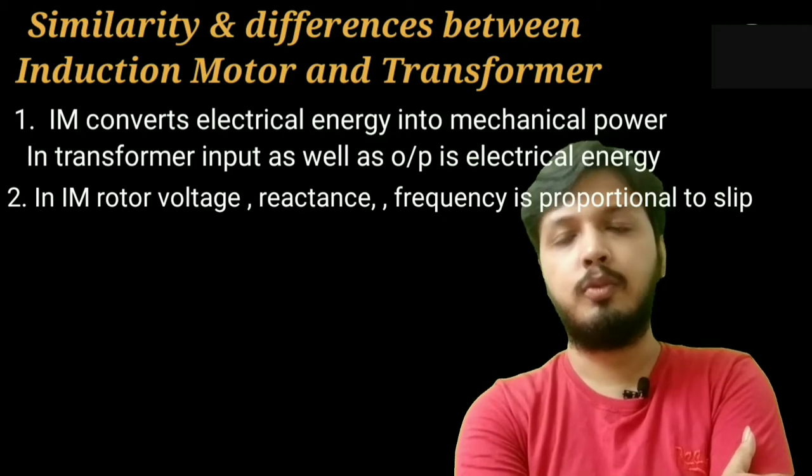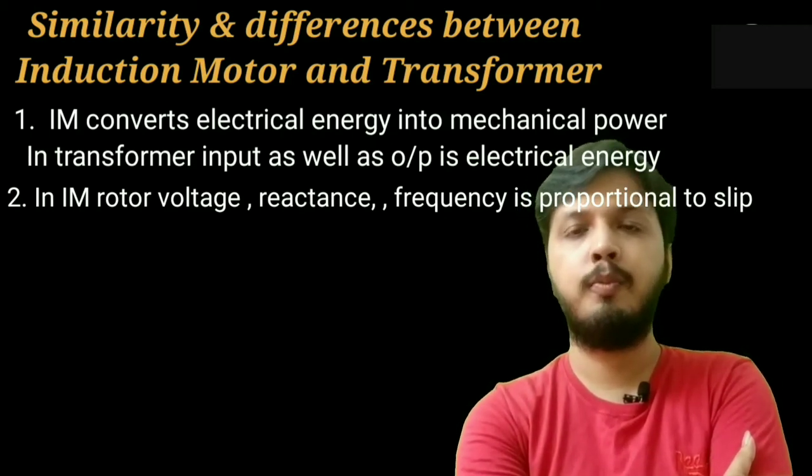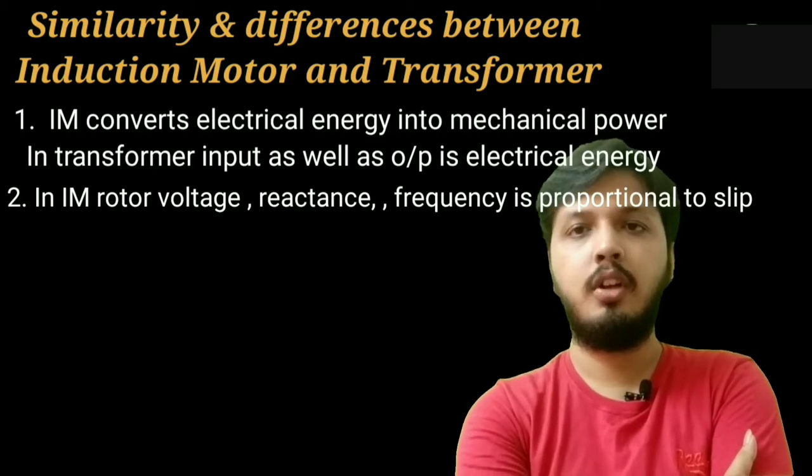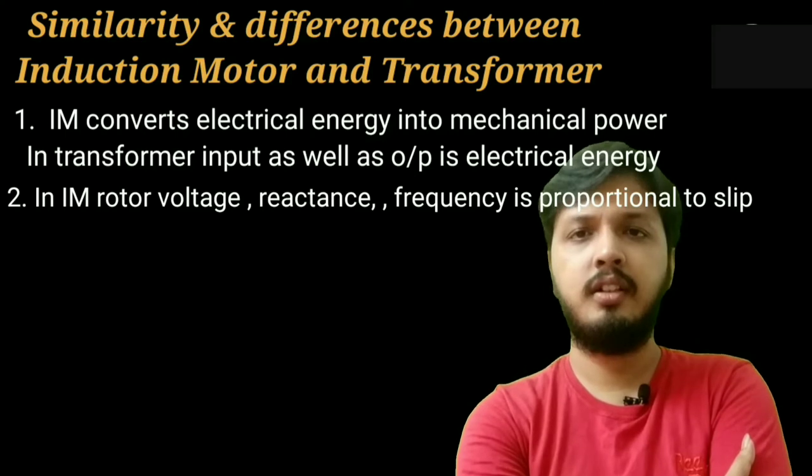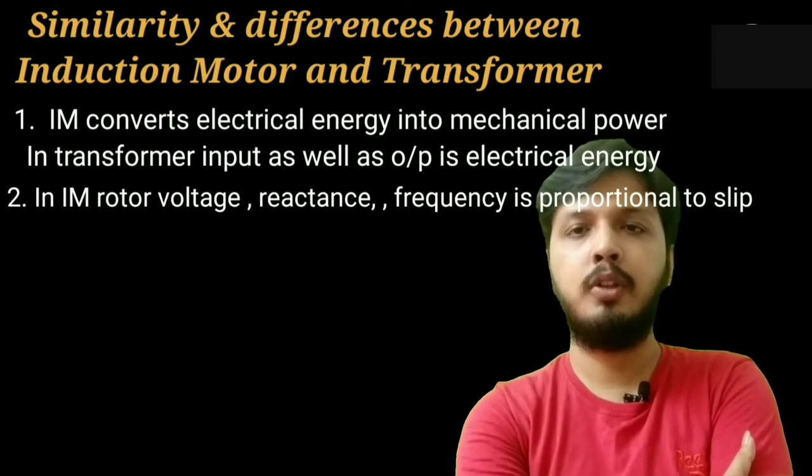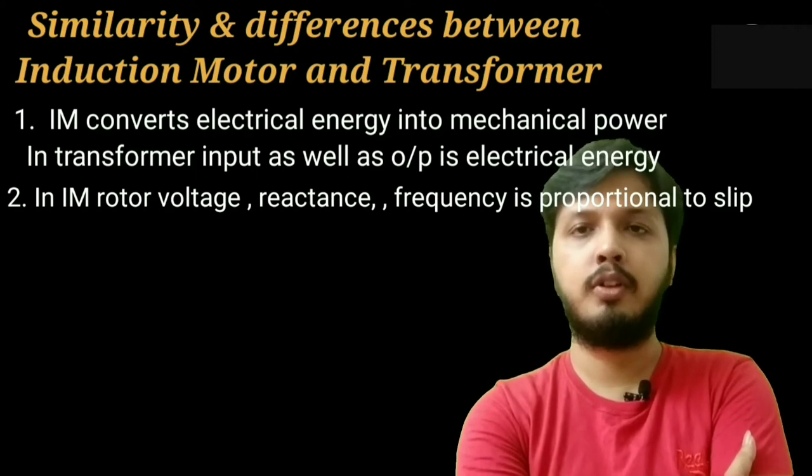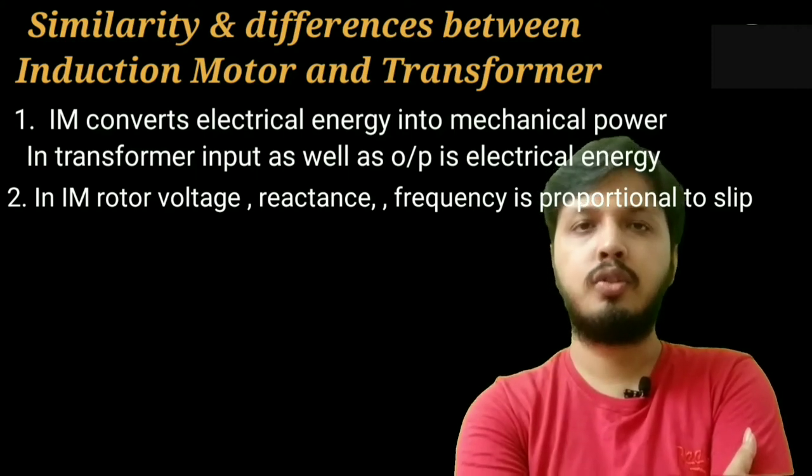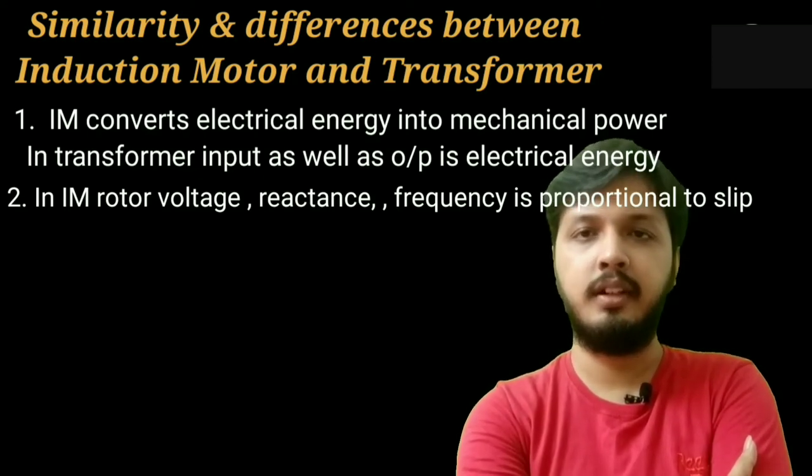The flux path in induction motor is completed through air gap. We know that air gives more reluctance to the flux. So to create the same amount of flux, we need more MMF. MMF equals N into I. As we need more MMF, it will draw more current. So no-load magnetizing current is high in case of induction motor.